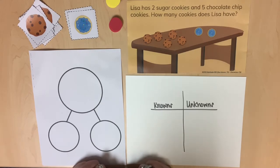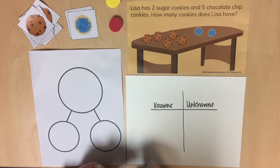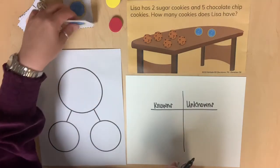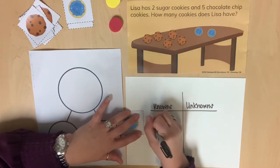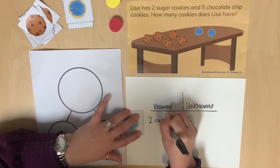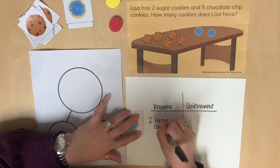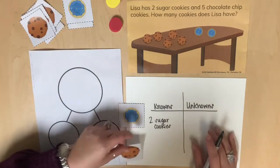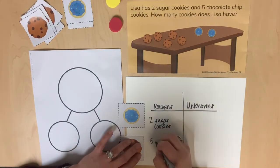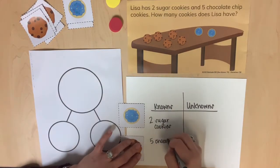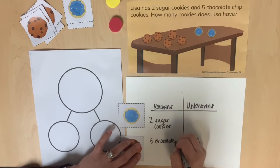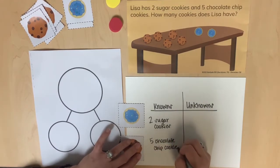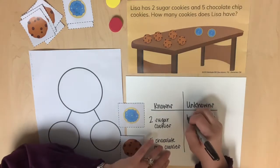After reading the following problem aloud — Lisa has two sugar cookies and five chocolate chip cookies. How many cookies does Lisa have? — ask students: What do we know about the problem? What do we need to know? We know Lisa has two sugar cookies and five chocolate chip cookies. We need to figure out how many cookies Lisa has.